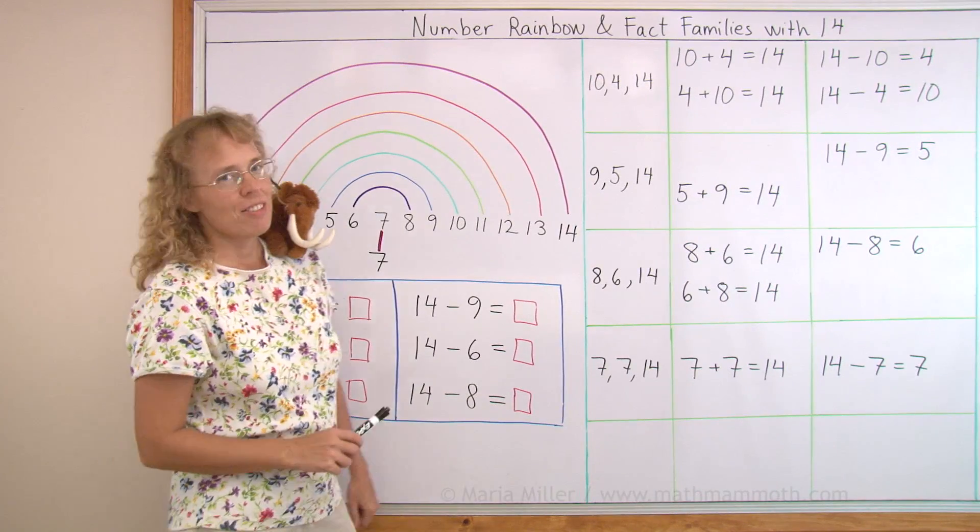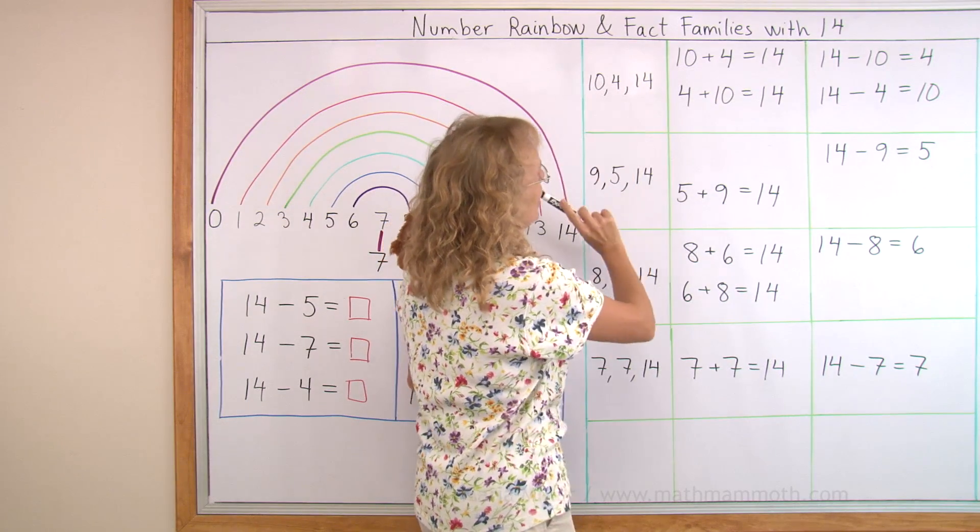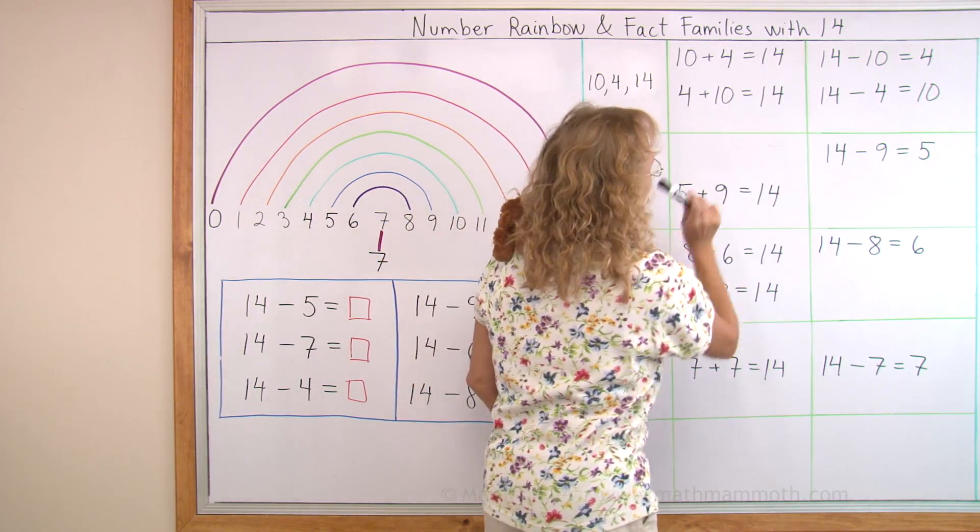Let's look at the fact families over here for a moment. Here's my first one, 10 and 4 and 14. Two additions, two subtractions.